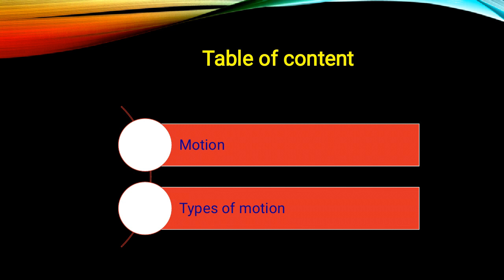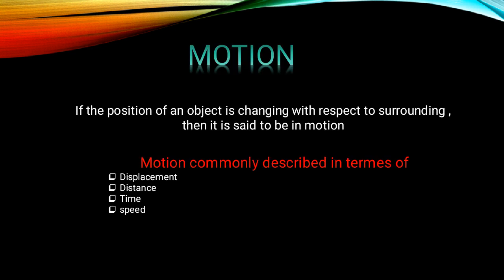The surroundings are the places in the neighborhood where various objects are present. The state of rest or motion of a body is relative. For example, a passenger sitting on a moving bus is at rest because he is not changing his position with respect to other passengers or objects on the bus.